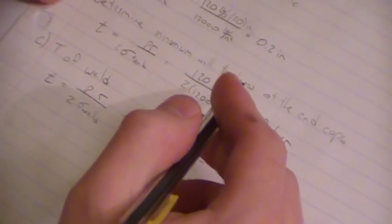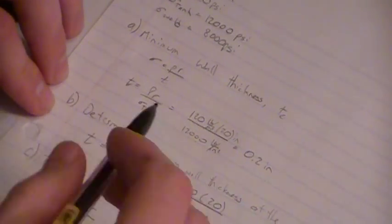Then for the second part, it was to determine the minimum wall thickness of the spherical end caps. For that, we were also given the formula, and it was pretty close to the same formula except it was the stress equals PR over 2T. So rearranging that formula, we have T equals PR over 2 times stress.